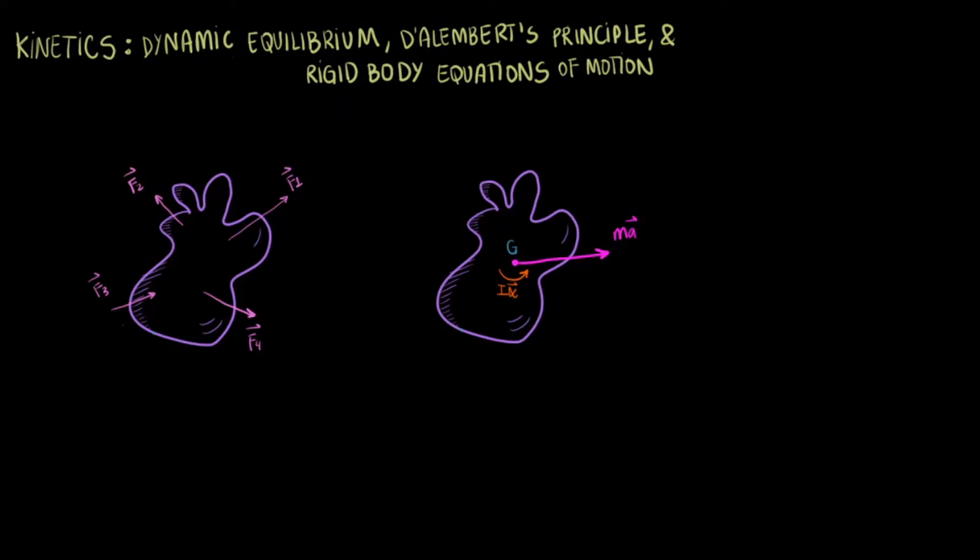If you subtract the body with the inertial force and the inertial torque from the other body with all the external forces that originated them, you get zero. Can you see why that's the case?